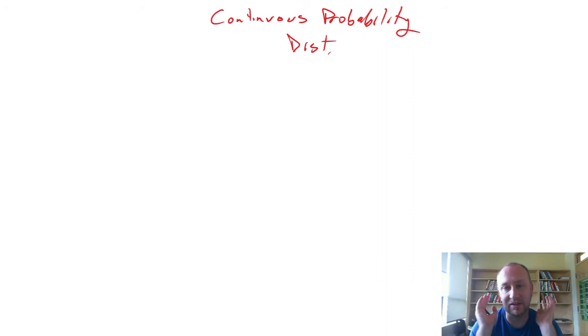Module five was entirely focused on those discrete variables and their probability distributions. Now module six we focus our discussion on continuous probability distributions of continuous variables.